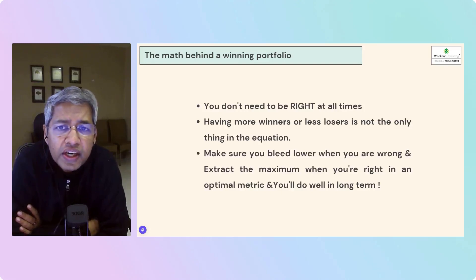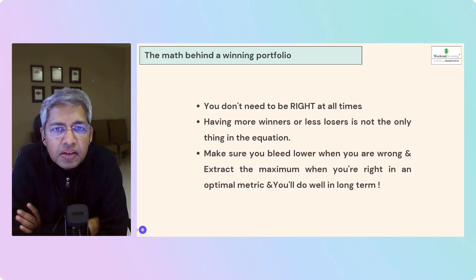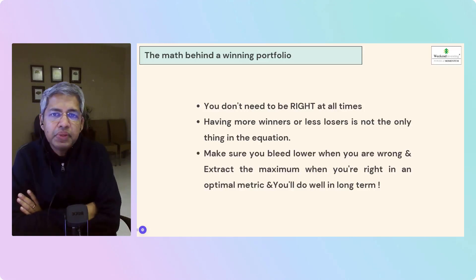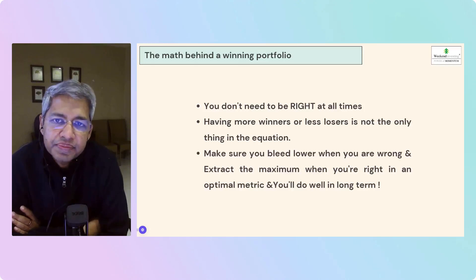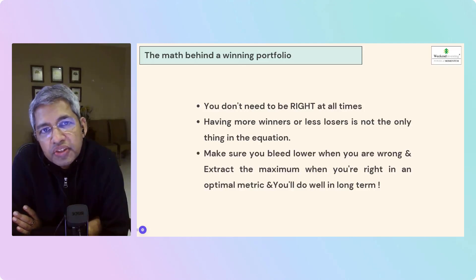This fetish that we have, especially in trading, that every trade should go right, that every trade unless it goes right you have to beat yourself up, doesn't work that way. Almost all trading and investing greats of the world don't have a win-loss ratio of more than 40% or 50%. In fact, the best traders even work at 35-40%.